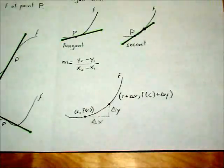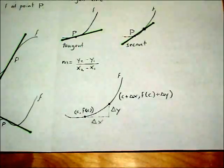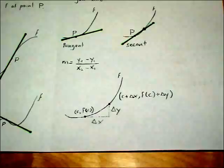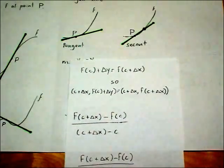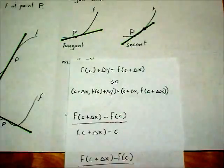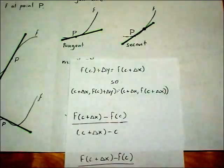If we make the first point c, f of c, then the second point will be c plus delta x, f of c plus delta x. We'll just call the point c plus delta x, f of c plus delta x.